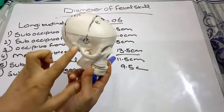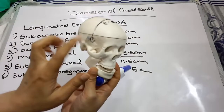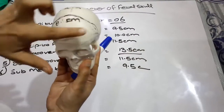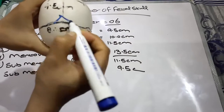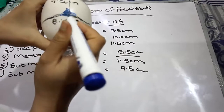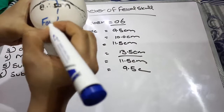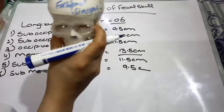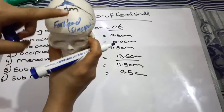Before going to the longitudinal diameters, we should know some important regions of the skull. This is our frontal bone, and here lies our anterior fontanel. The region which lies between the anterior fontanel and the orbital ridges is known as our forehead, also known as sinciput.